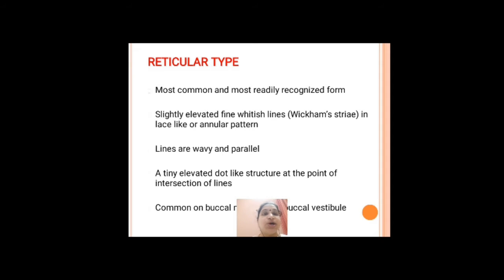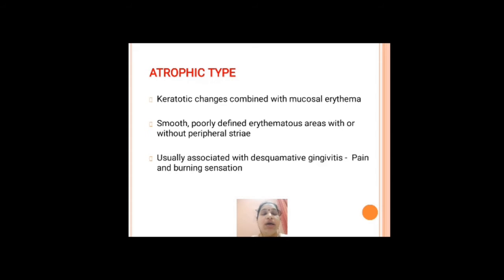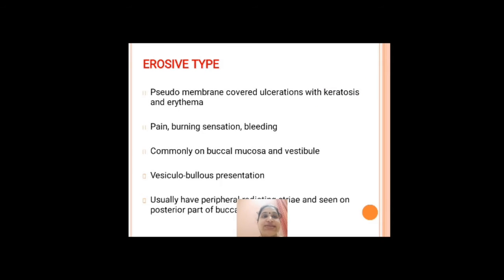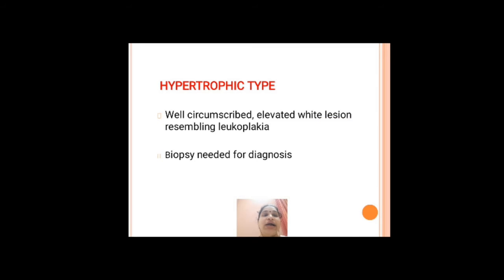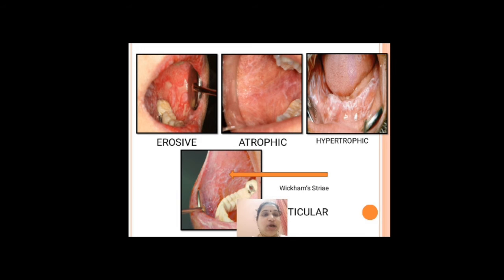The reticular type consists of fine whitish lines called Wickham's striae and is very commonly found on the bilateral buccal mucosa. The atrophic type appears as poorly defined erythematous areas. The erosive type appears as ulcerations covered with keratosis and erythema. The hypertrophic type appears as an elevated white lesion. Of all these, the reticular type is the most common.